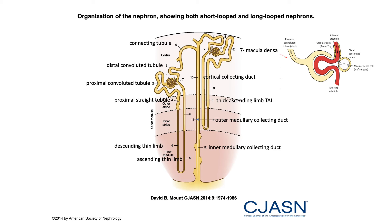Number eight is the distal convoluted tubule. Just as we have a proximal convoluted tubule, we have a distal convoluted tubule. This is followed by number nine, called the connecting tubule — some call it the connecting segment. When we reach number nine, we've reached the collecting tubule, and this part of the nephron has three smaller parts: the cortical collecting duct, the outer medullary collecting duct, and finally the inner medullary collecting duct. Take a screenshot and try to remember them — we'll be talking about them a lot.